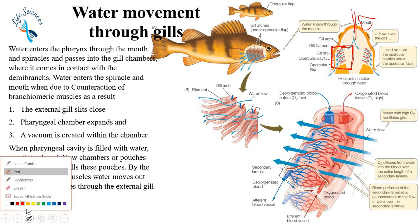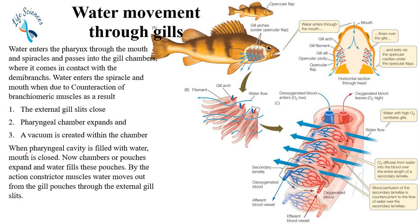Now, how does water exit? When the pharyngeal cavity is filled with water, the mouth closes and water entry from outside stops. Next, the chamber or pouches expand and fill. The water present here moves to either side. The pouches fill with water.